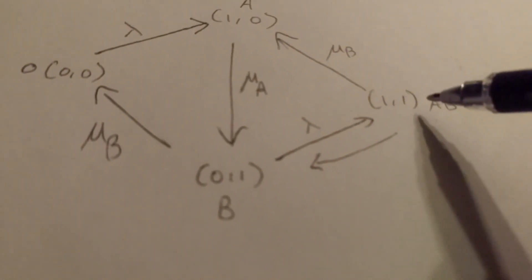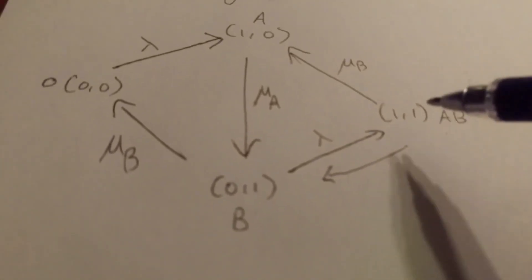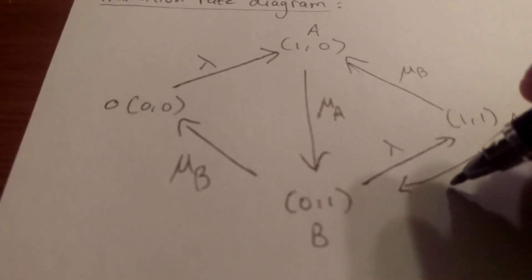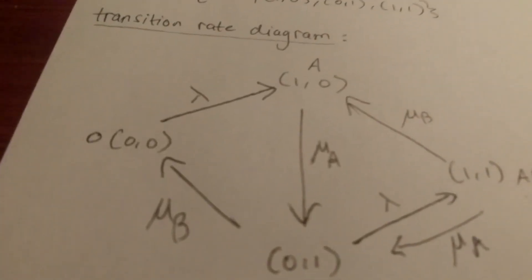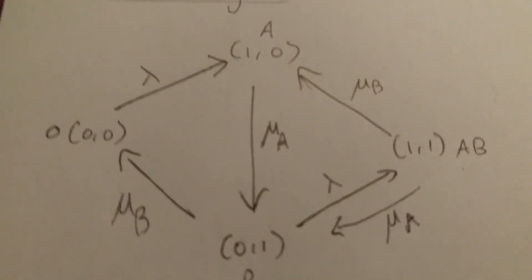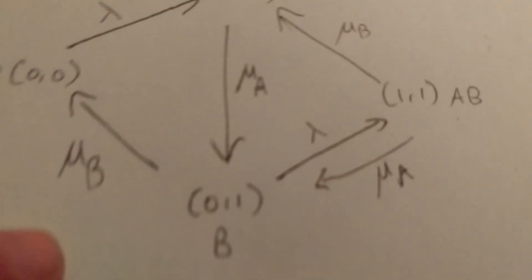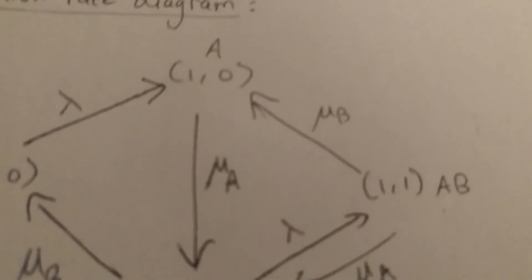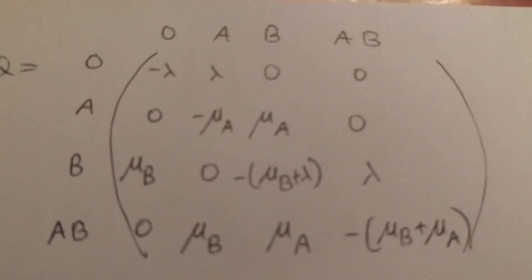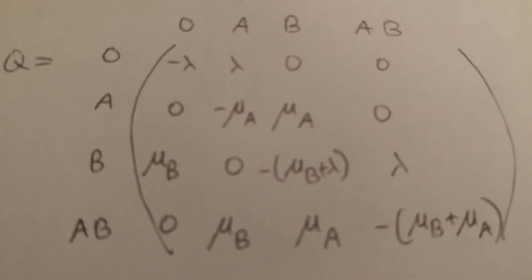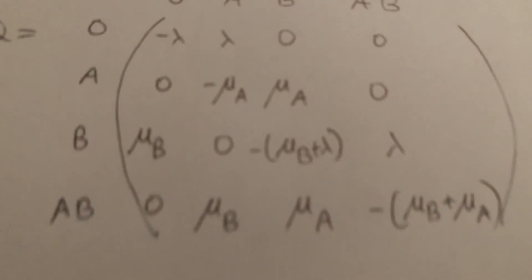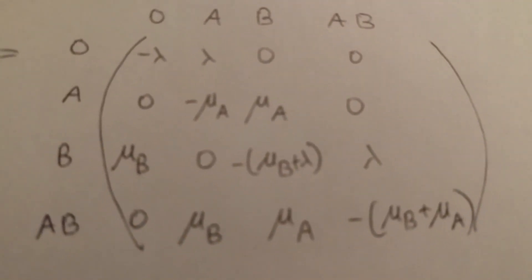The rate moving from state (1,1) backward — when a customer leaves A — is μ_a. That completes our transition rate diagram. We then put all these rates into our Q matrix.